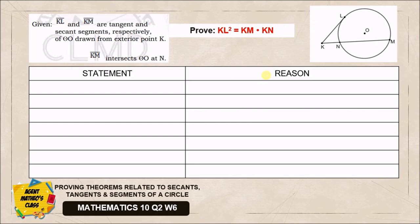We'll have statement and reason. Like we always do, the very first one is to write down that KL and KM are the tangent and secant segments from our drawing. They intersect at a certain point, which is K. The reason here is given, and with that you have one point. For our second statement.